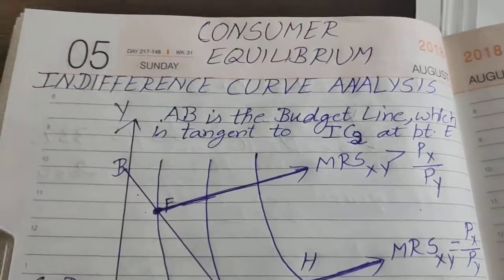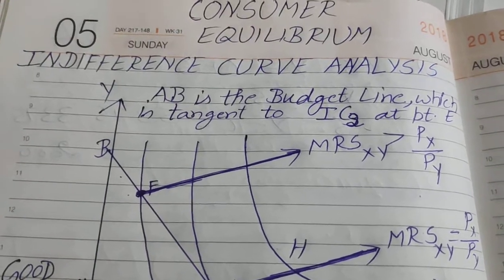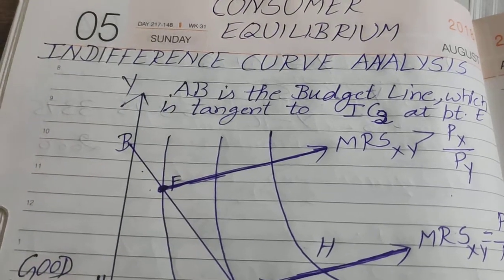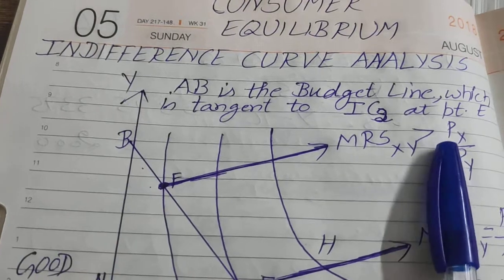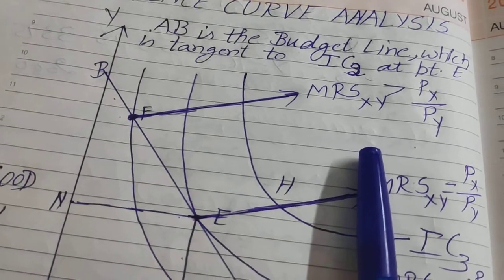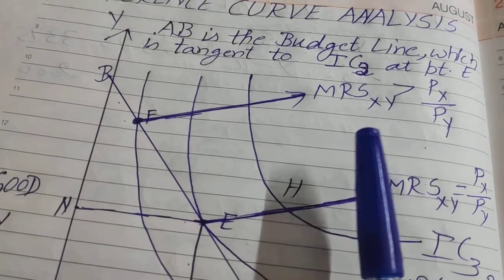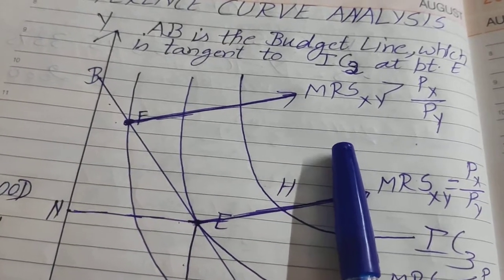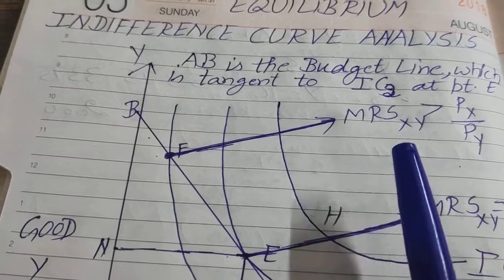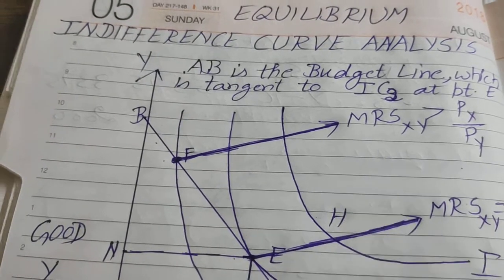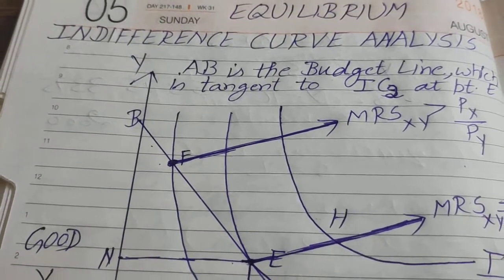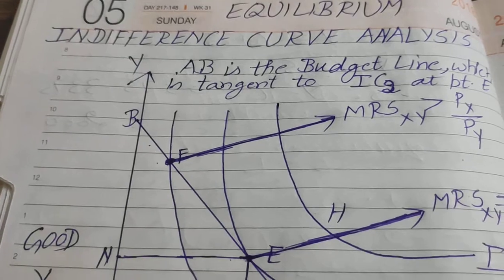Our next video is about consumer equilibrium through indifference curve analysis. We already know the meaning of consumer equilibrium — it is the same under utility analysis and indifference curve analysis. Consumer maximum satisfaction tab derive karta hai jab wo apni limited income se market mein jaake jo market prices available hote hain unpe goods ko kharidata hai. Indifference curve mein hum consumer equilibrium study karenge by taking an indifference map and budget line together.